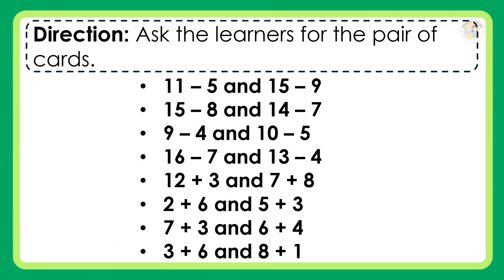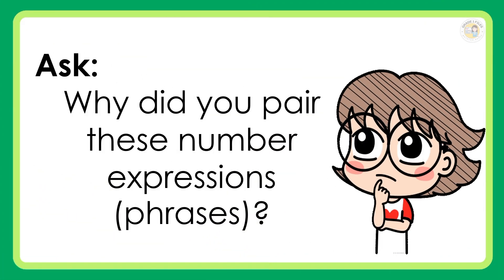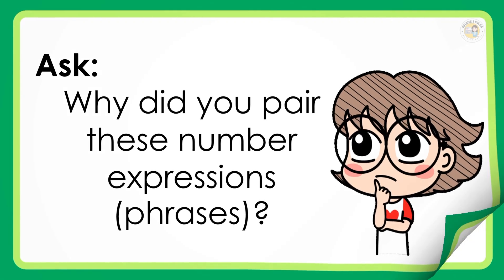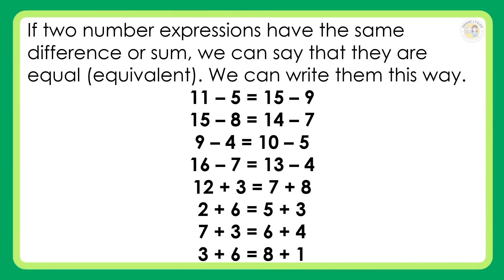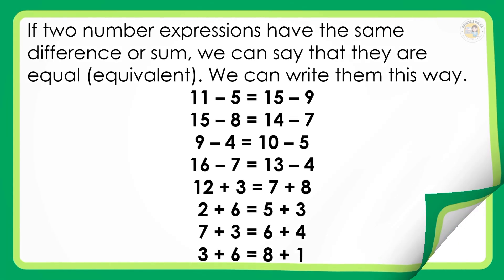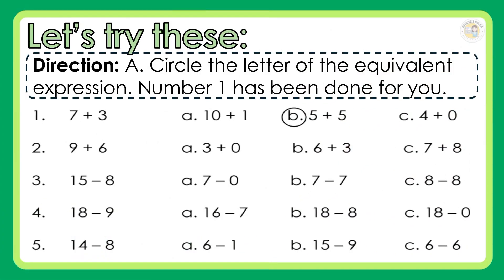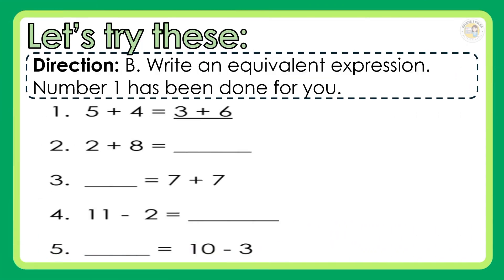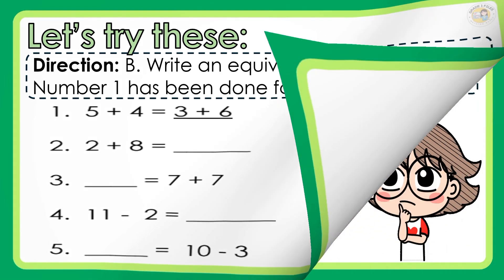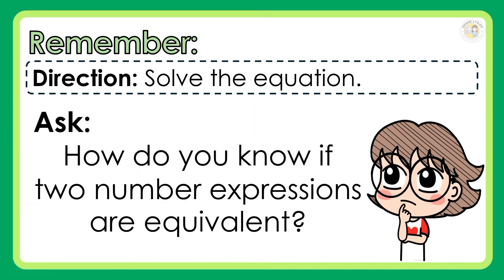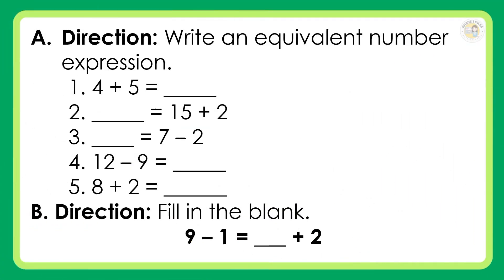Direction: ask the learners for the pair of cards. Why did you pair these number expressions? If two number expressions have the same difference or sum, we can say that they are equal. We can write them this way. What does the equal sign tell us? Let's try this. Direction: circle the letter of the equivalent expression — number 1 has been done for you. Write an equivalent expression — number 1 has been done for you. How do you know if two number expressions are equivalent? Write an equivalent number expression. Fill in the blank.